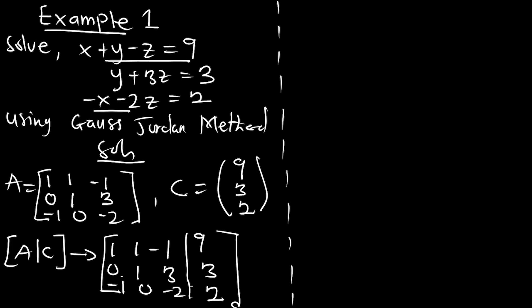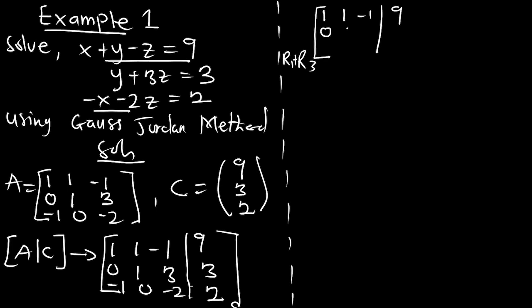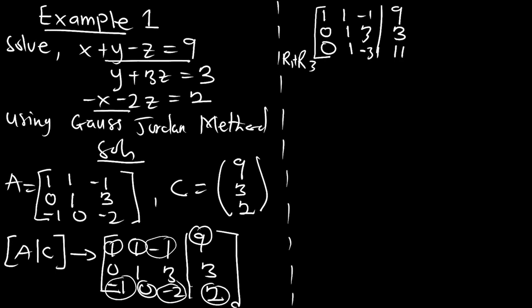First, I want to convert the negative 1 in row 3 to 0. I have to add row 1 and row 3, applying it on row 3. So row 3 becomes R1 + R3: 1 + (-1) = 0; 1 + 0 = 1; -1 + (-2) = -3; 9 + 2 = 11. Row 1 stays as 1, 1, -1 | 9. Row 2 stays as 0, 1, 3 | 3.